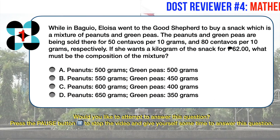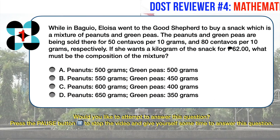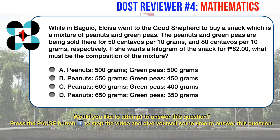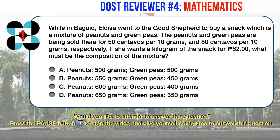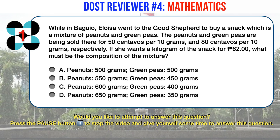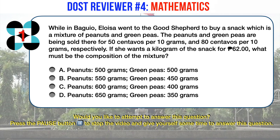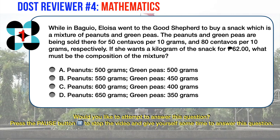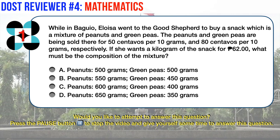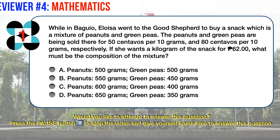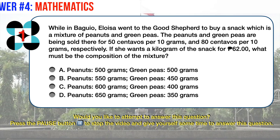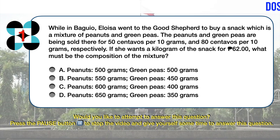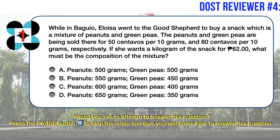Math question number 1. While in Baguio, Aloysia went to the Good Shepherd to buy a snack which is a mixture of peanuts and green peas. The peanuts and green peas are being sold there for 50 centavos per 10 grams and 80 centavos per 10 grams, respectively. If she wants a kilogram of the snack for 62 pesos, what must be the composition of the mixture?